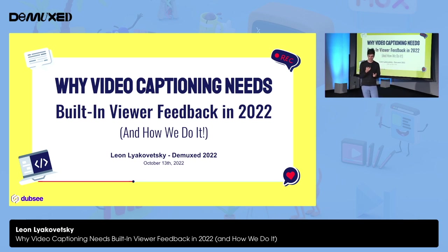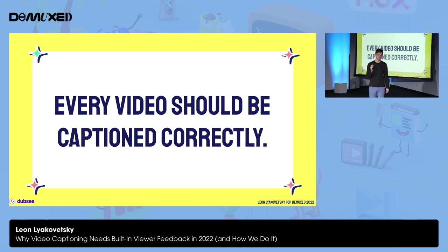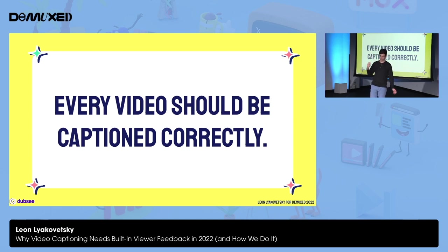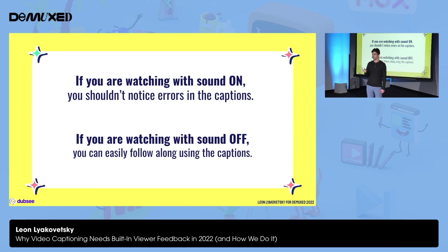I consider myself a captioning and subtitling specialist, but you don't have to be a video engineer to agree with me that every video should be captioned correctly. I believe every video, whether it's racked up one view or a billion views, should have a corresponding caption track that accurately displays what is said and heard. For the purposes of this talk, my simple definition of correct captions is: if you're watching a video with the sound on and the captions on, you should not notice any errors relative to what you are seeing and hearing. And if you're watching with the sound off, you can easily follow along and you don't feel like you're missing anything. The captions serve their purpose.